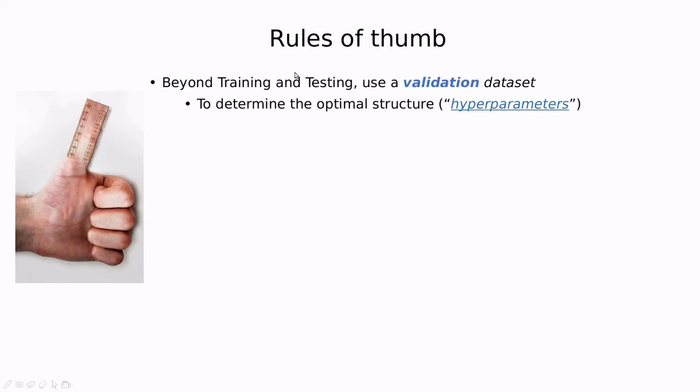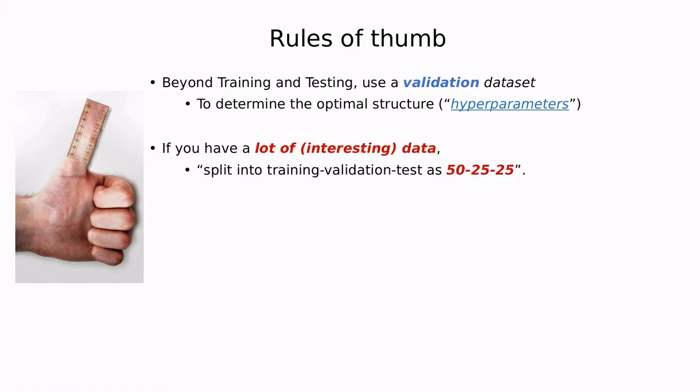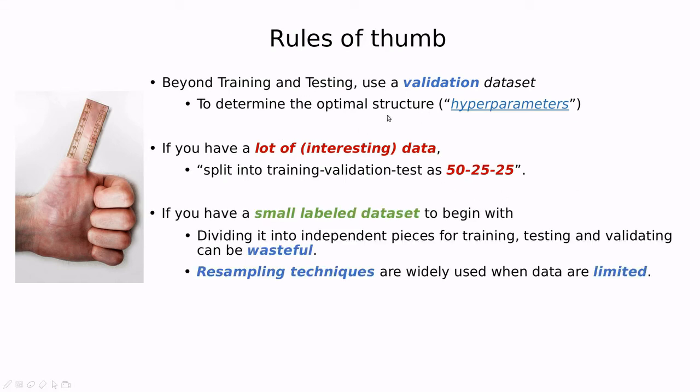First of all, beyond training and testing, sometimes we define a new validation data set. This validation data set is sometimes used to determine the hyper structure of the model, in the case of KNN, for instance, the number K. If we have a lot of data, if our data set is huge, then a typical rule of thumb is splitting the data between training 50%, validation 25%, and testing 25%. We can use 50% for training, then decide which is the best K, and then use the 25% at the end of the data set to test if the error is low or high.